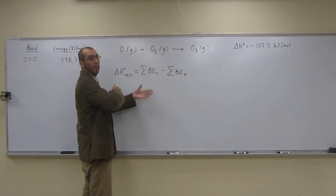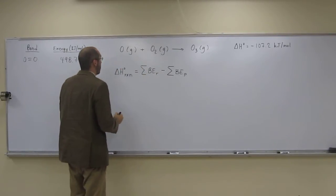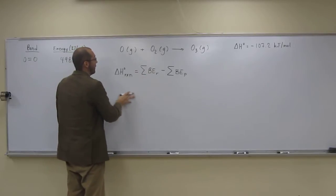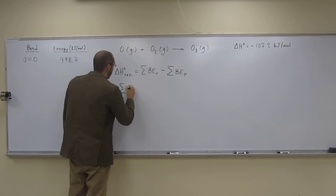So how do we do this? Let's rearrange this equation to solve for that sum of bond energy. So we'll take this to the other side, so we'll get the negative sum of the bond energy of the products...